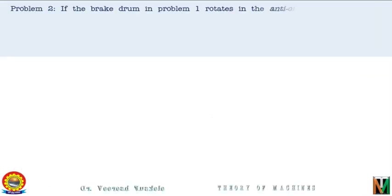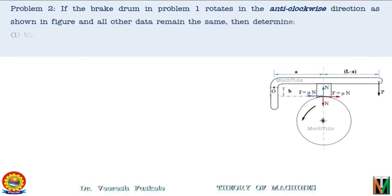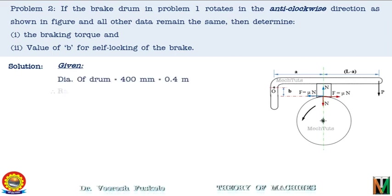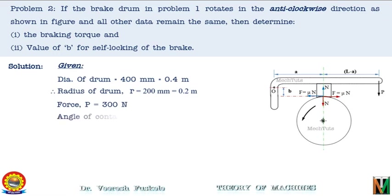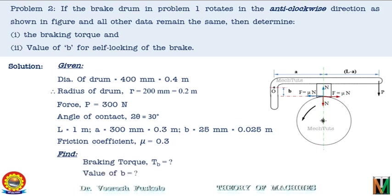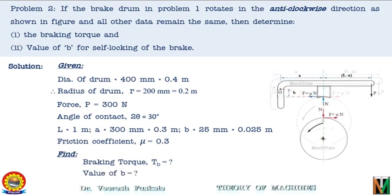Problem 2: If the brake drum in Problem 1 rotates in the anticlockwise direction as shown in the figure, and all other data remain the same, determine the braking torque and the value of B for self-locking of the brake. All given parameters are the same: diameter 0.4 m, radius 0.2 m, P = 300 N, angle of contact 30°, L = 1 m, A = 0.3 m, B = 0.025 m, μ = 0.3. Only the direction of friction force changes.